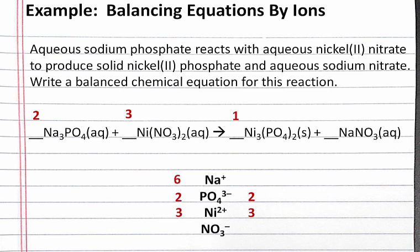And last we can balance sodium and nitrate. We currently have 6 sodium plus on the left. So to get 6 sodium plus on the right, we need 6 sodium nitrate.